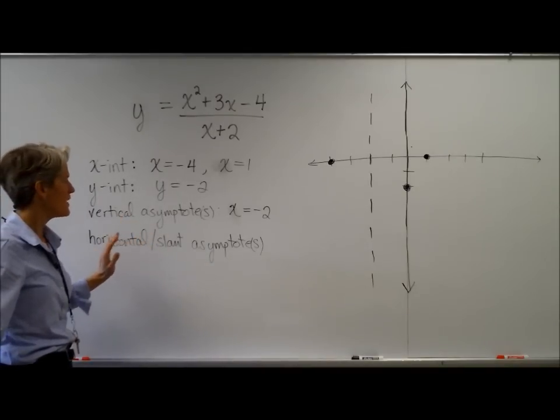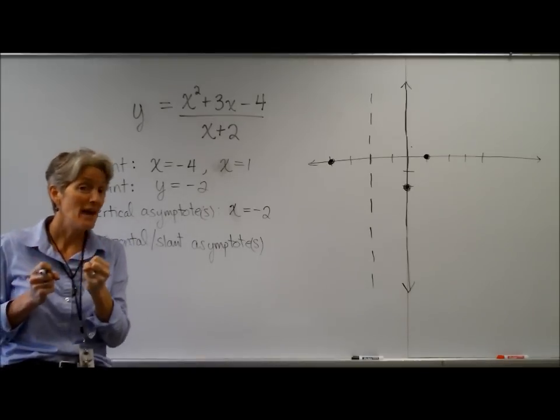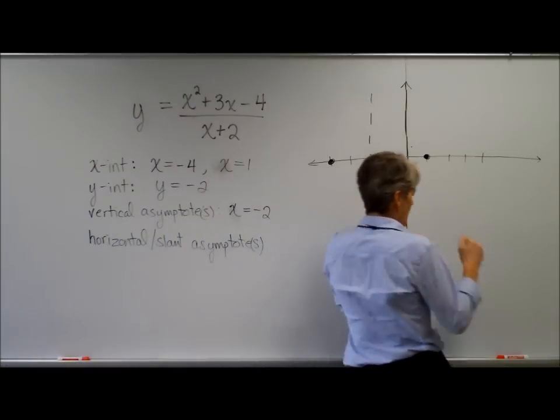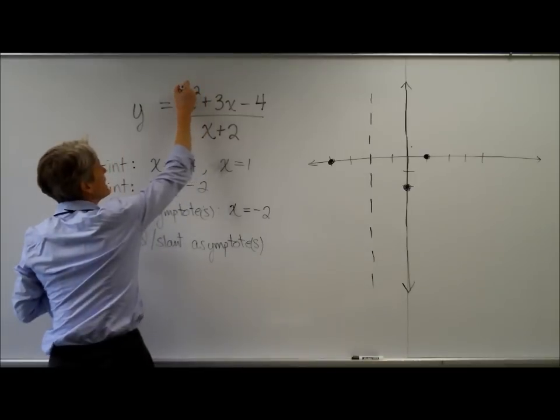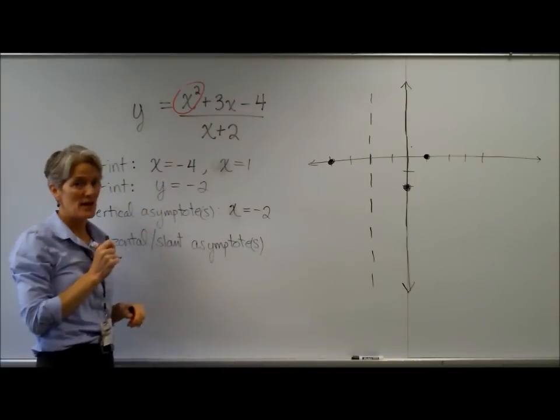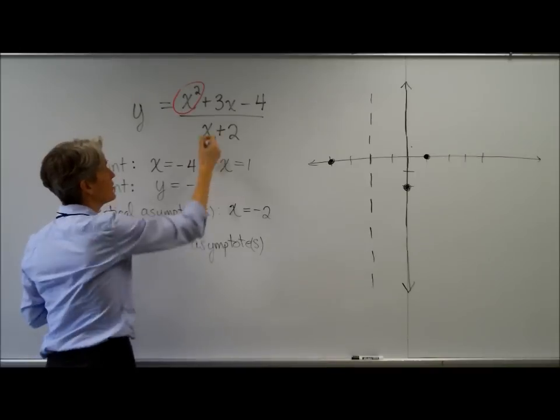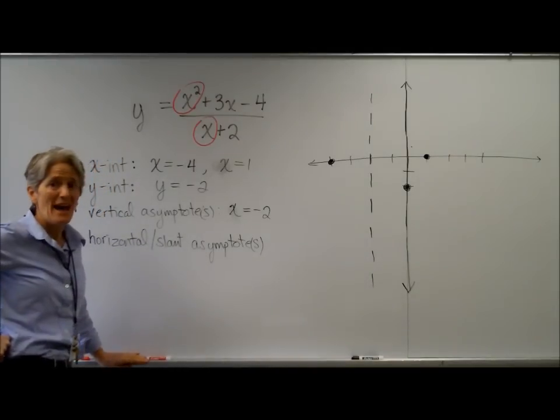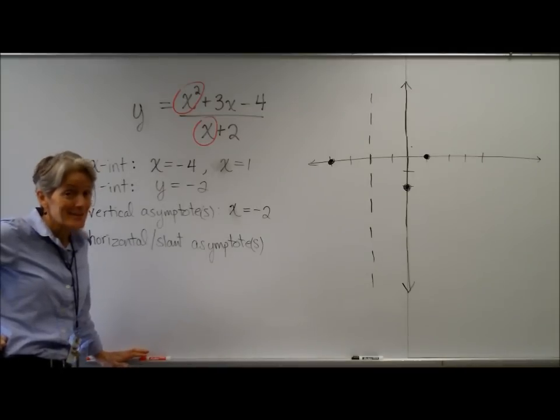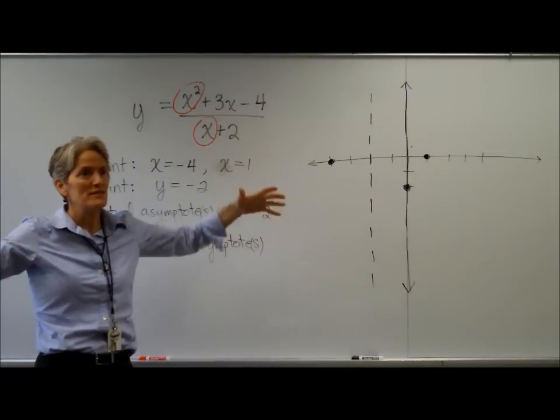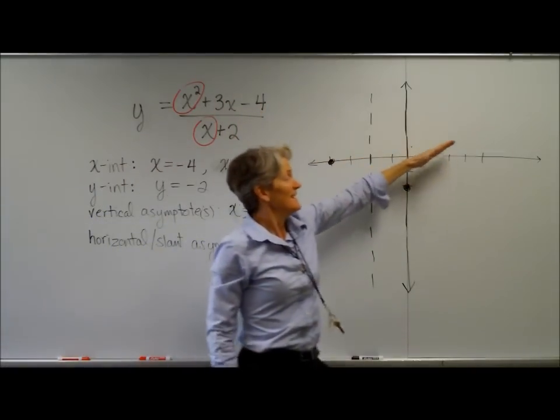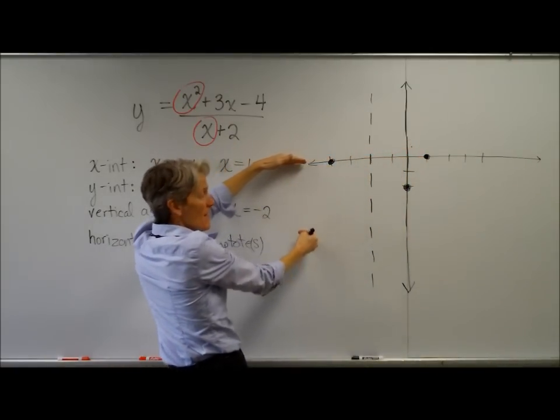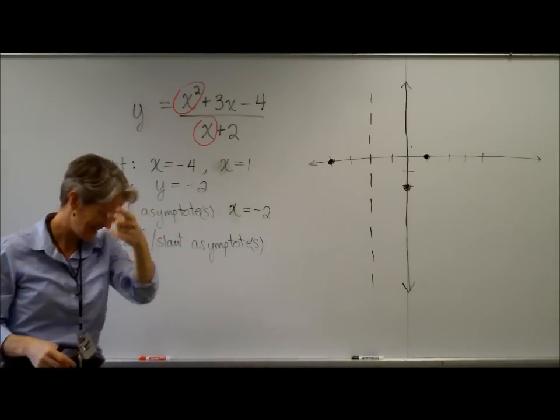Horizontal or slant asymptote. Right. So remember, the horizontal asymptote was always looking at end behavior. So let's look at the end behavior of this. End behavior, we're going to look at the powerful guy on the top, the controlling term. So remember, as I'm plugging in really, really big x's or really, really negative x's, I think we would agree that x squared is most powerful. On the denominator, the controlling term is the x. Hey, x squared divided by x is x. So as my x gets bigger and bigger, what's going to happen to my y? It's also going to get bigger? It's going to get bigger and bigger. As my x gets more and more negative, what's going to happen to my y? It's going to get negatively big.